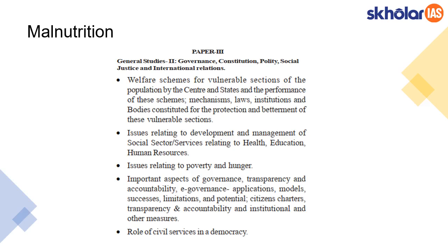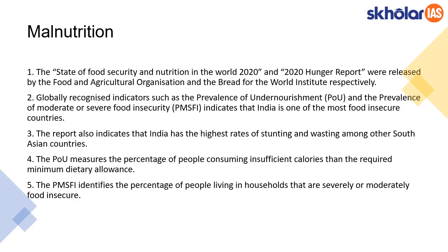The final article is on malnutrition, from The Hindu. It is related to GS2 mains paper under the section on issues relating to poverty and hunger. This article surfaced because of two reports: the State of Food Security and Nutrition in the World 2020, and the 2020 Hunger Report. These two reports are very important — they might ask which organizations release them. The first is released by FAO — Food and Agriculture Organization — and the 2020 Hunger Report is released by Bread for the World Institute.